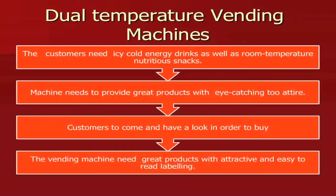Dual temperature vending machines serve customers who need icy cold energy drinks as well as room temperature nutritious snacks. The machine needs to provide great, eye-catching products. Customers come and look in order to buy, so the vending machine needs great products with attractive, easy-to-read labeling. The machine has to be temperature regulated and covered by glass to give an attractive ambience, with large labeling so customers can read what is written — since they cannot touch products, only see and then vend.